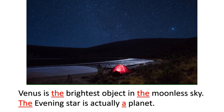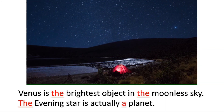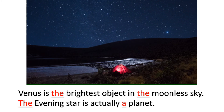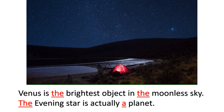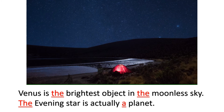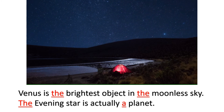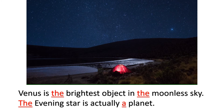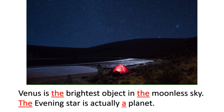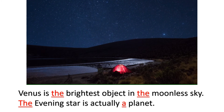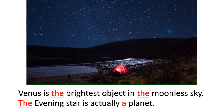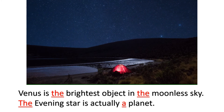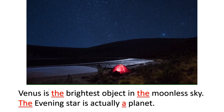'Venus is the brightest object in the moonless sky.' 'The' is not used before Venus because Venus is the name of a Greek goddess. 'The evening star is actually a planet.' 'The' is used before 'evening star' because we are using an adjective before 'star'.